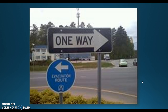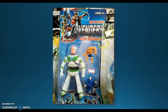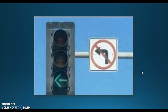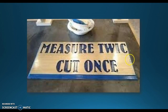Here's a photo from Apex, North Carolina: an intersection with an evacuation route sign next to a 'one way' sign — super confusing when you're panicked and not thinking clearly. Then there's Avengers packaging featuring Buzz Lightyear, The Thing, and Lex Luthor — none of whom are Avengers. There's also a contradictory traffic light situation you wouldn't want to face with a police car behind you. And finally: 'Measure twice, cut once' displayed ironically on something clearly cut wrong. All examples of revision gone bad.